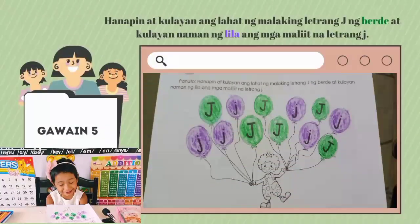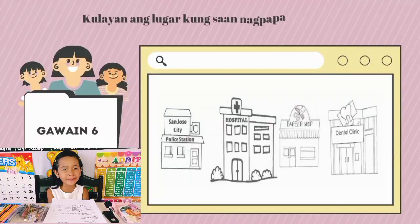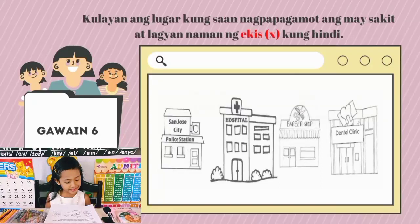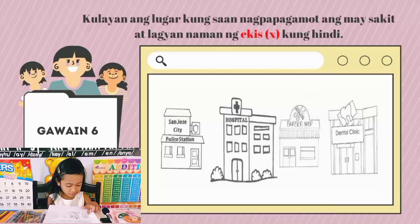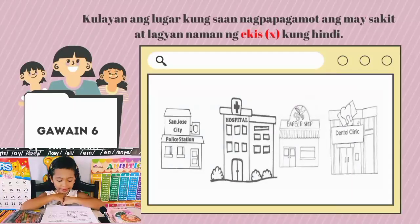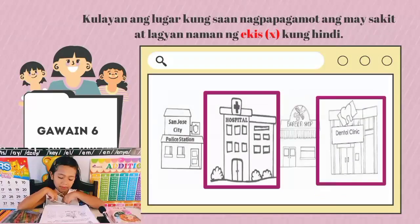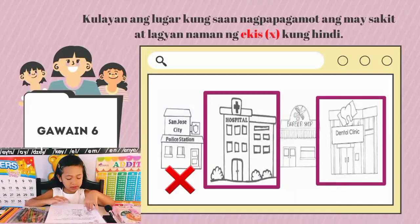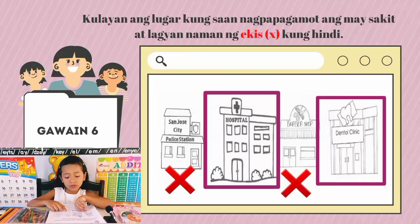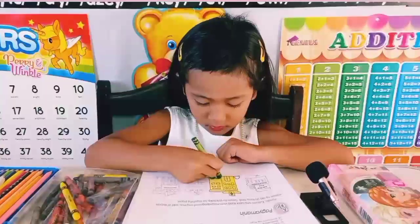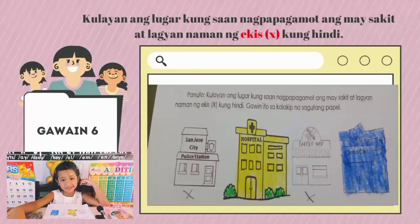Ang malaki at maliit na letrang J. Kulayan ang mga lugar kung saan nagpapagamot ang mga may sakit, at lagyan ng ekis kung hindi. Meron ditong pulis station, hospital, barbershop, at dental clinic. Ang kukulayan ko ay hospital at dental clinic — kapag may sakit tayo, nagpapagamot tayo sa hospital; at kapag masakit ang ating ngipin, pumupunta tayo sa dentista. Lagyan ng ekis ang police station at barbershop.